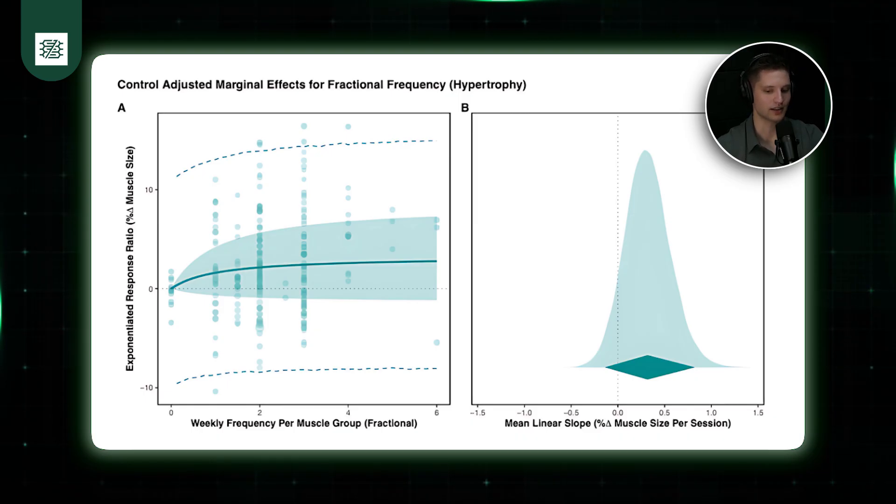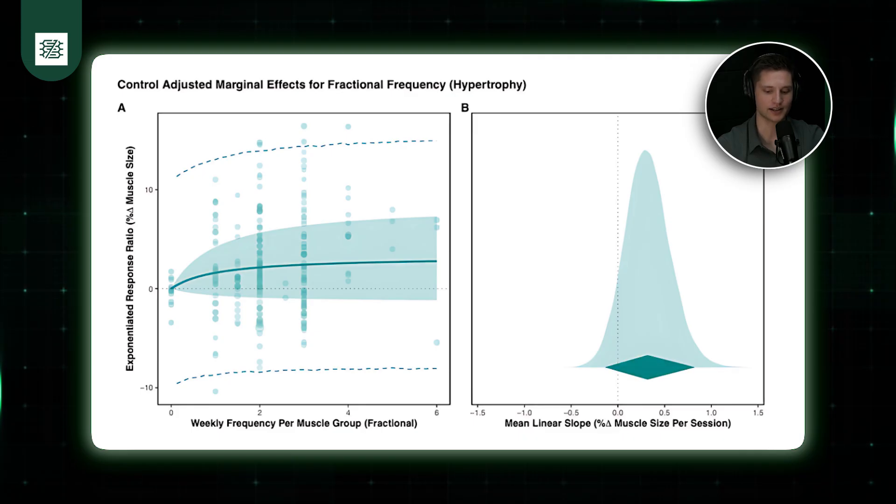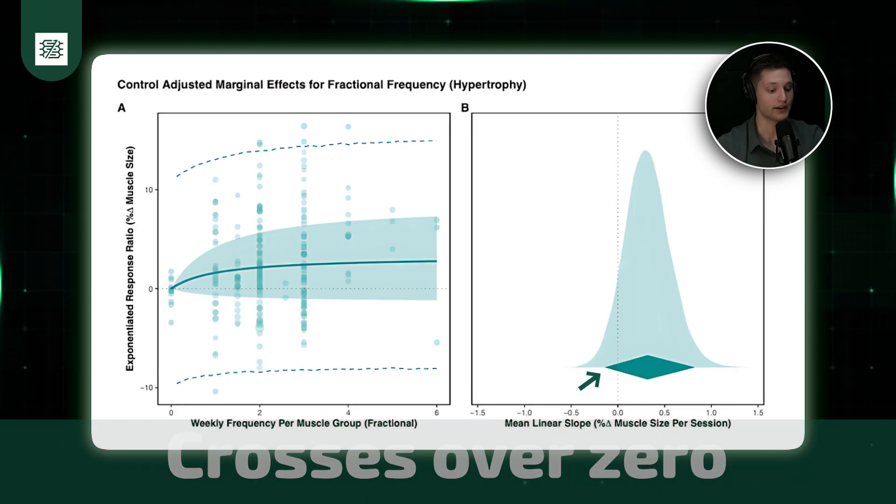However, you also need to consider the uncertainty around that marginal slope, and that is basically the width of the diamond here. You can see that the width of the diamond on the right-hand side crosses over zero. The credible interval spanned from a negative 0.14% all the way to 0.82%.